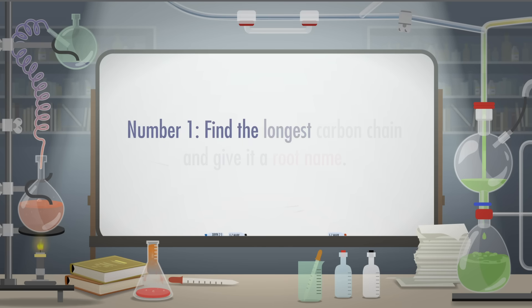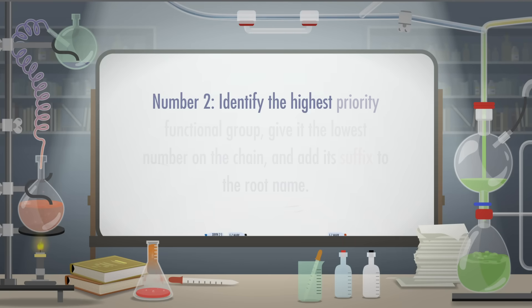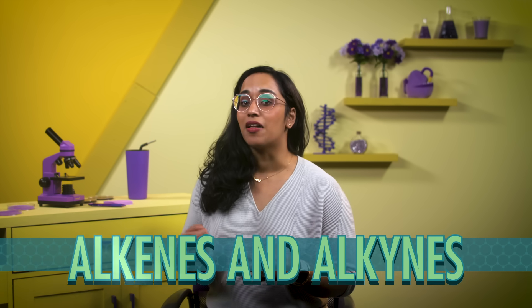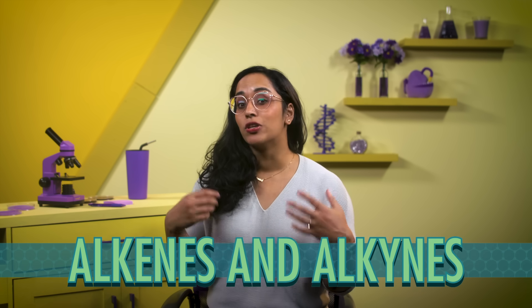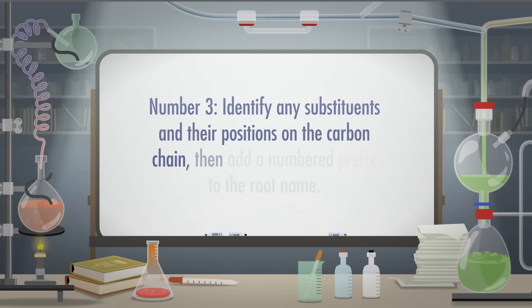Last episode, we learned that there are three steps to naming organic compounds. Number one, find the longest carbon chain and give it a root name. Number two, identify the highest priority functional group, give it the lowest number on the chain, and add its suffix to the root name. Last time we just dealt with hydrocarbon functional groups like alkenes and alkynes, but we'll learn plenty more today. And number three, identify any substituents and their positions on the carbon chain, then add a numbered prefix to the root name.